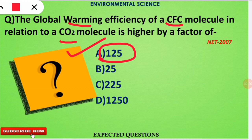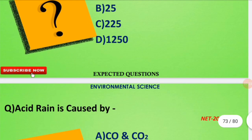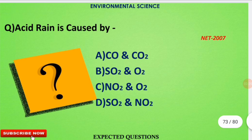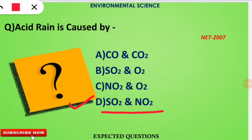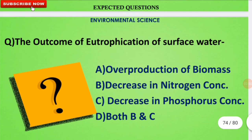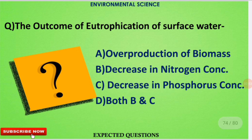The next question is very simple: acid rain is caused by which of the following molecules? These kinds of questions are also asked and are very straightforward. The correct option is option D — sulfur dioxide (SO₂) and nitrogen dioxide (NO₂) are the major causes of acid rain.